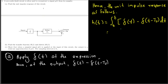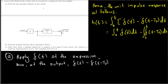We can separate this into two integrals. Integrating an impulse function is equivalent to a unit step function. So the first integral gives u(t), and the second integral gives the shifted unit step u(t − T_s). Therefore h(t) = u(t) − u(t − T_s).